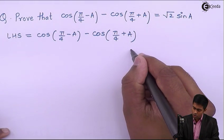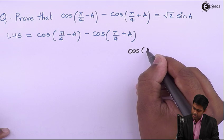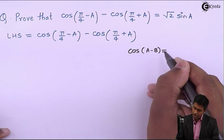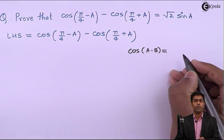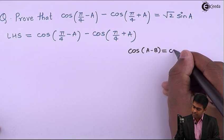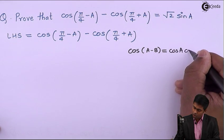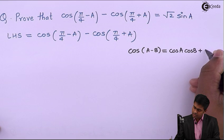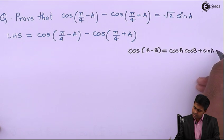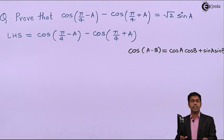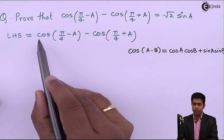We know that the formula of cos(A - B) is cos A cos B + sin A sin B. By using this identity we can find out the value of cos(π/4 - A).